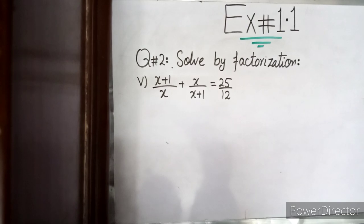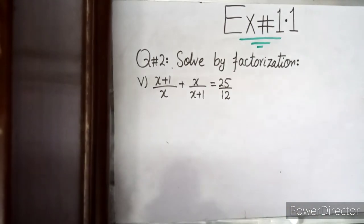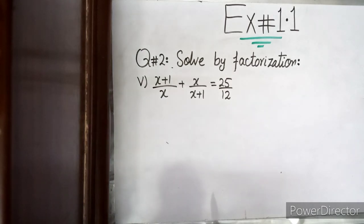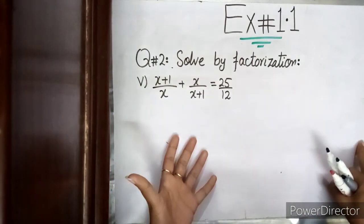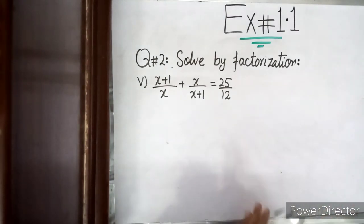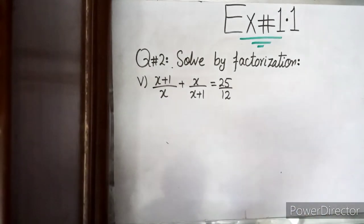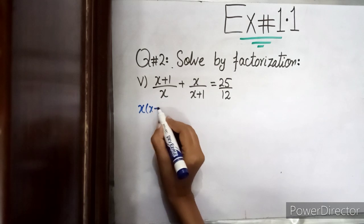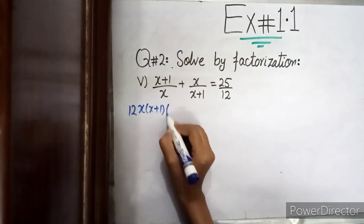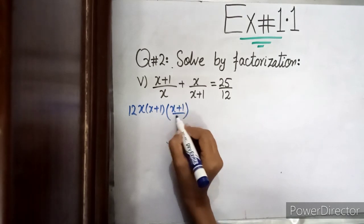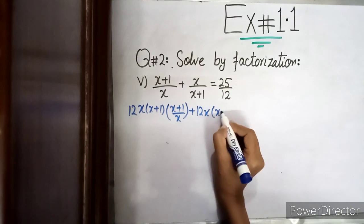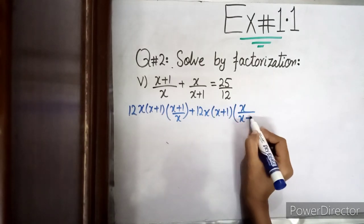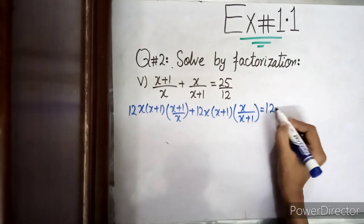Students, I have left part number 4 and part number 6 for you to solve on your own using factorization. If you have any difficulty, come to the comment section and your problem will be sorted out. There is one question in odd form — I will solve that one for you, and part 6, which is similar, you will do yourselves.